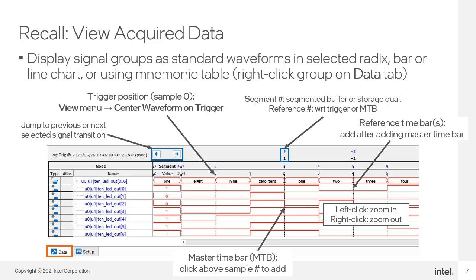By default, the Data tab provides a waveform display of all the data-enabled signals in the node list. Grouped signals have data displayed in a radix of the user's choosing. You can change the radix or view the grouped signal data in different ways, such as a bar or line graph, by right-clicking on the signal group name in the column on the left and selecting a view option. You can also use a mnemonic table for the grouped data, which can be used in the same way on the Data tab as on the Setup tab to display captured data.